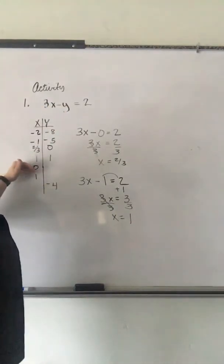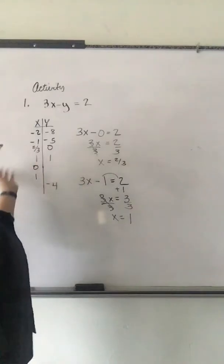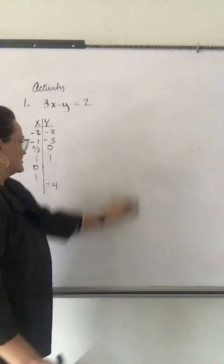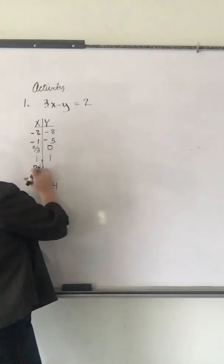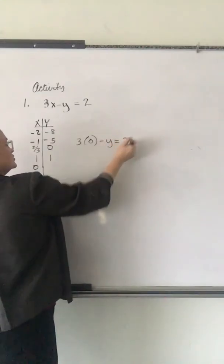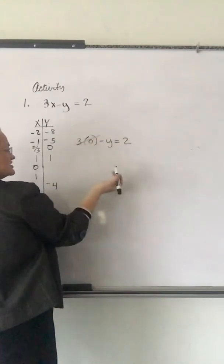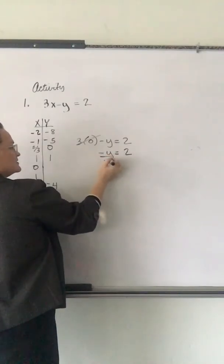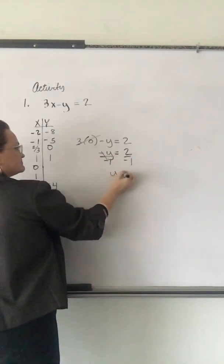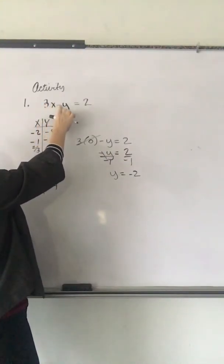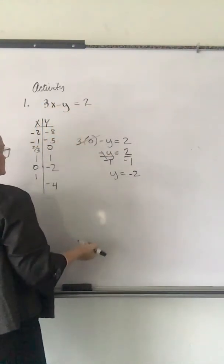Now, I shift back to doing X values. You can do either side, either perspective. You're just looking for combinations that solve this original equation. So, I'm going to plug in X is 0. 3 times 0 minus Y equals 2. 3 times 0 is 0. So, we just have the minus Y equals 2. Divide out the negative 1. Negative 2. So, there's another combo.